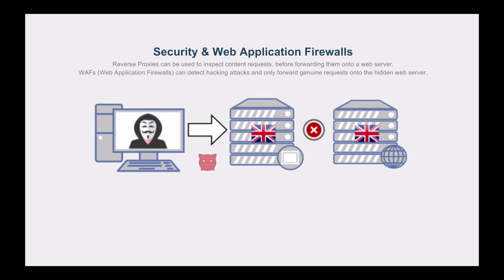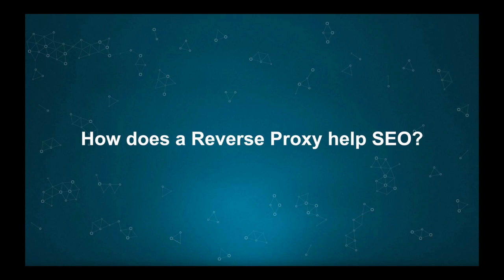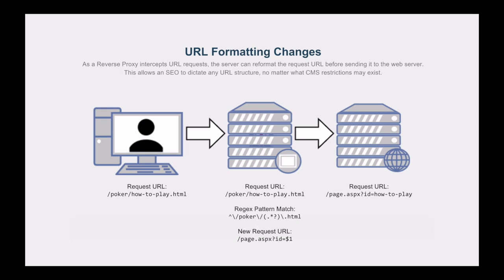Reverse proxies are also used for security. There's something called a web application firewall, which is a much more specific type of firewall compared to a network firewall. It takes each request — even encrypted ones — decrypts them, and analyzes them for suspicious traffic such as database injection attacks, URL injection attacks, or known exploits in popular software. If it looks like suspicious traffic, it stops the request from reaching the web server, so the web server is never affected. This is another sort of reverse proxy.